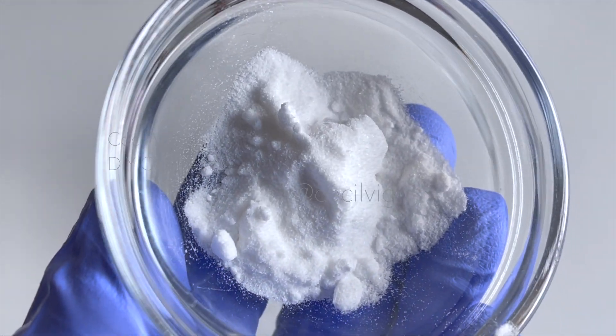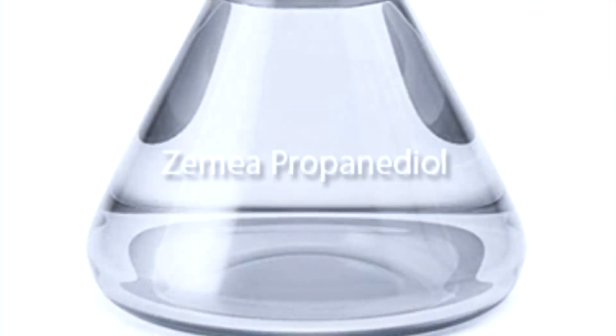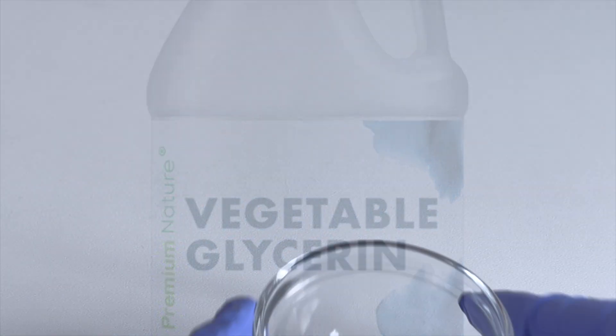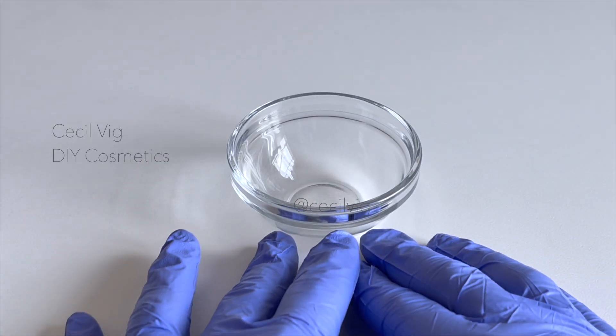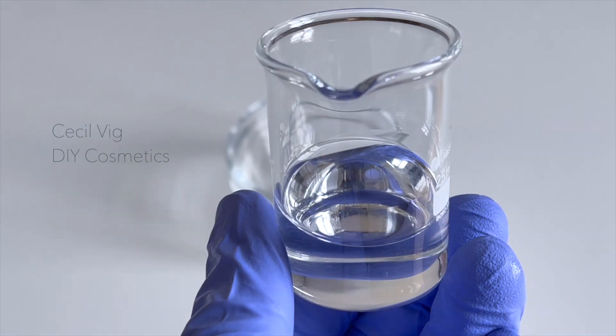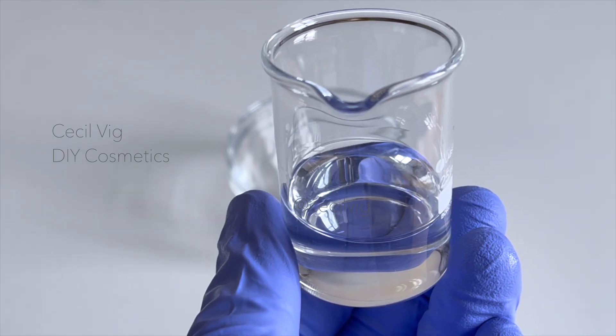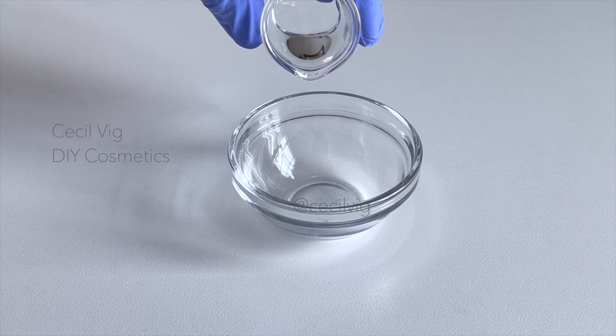The first step is to dissolve the salicylic acid. To do this we need Zemea propanediol and vegetable glycerin. Take a heat proof mixing bowl and put the propanediol into the bowl. Propanediol is a natural, skin friendly, and preservative enhancing alternative to petroleum glycols.